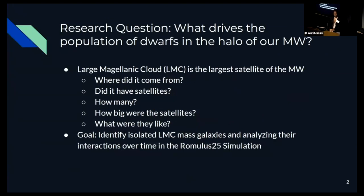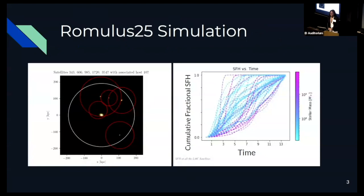My overall research question is: what drives the population of dwarfs in the halo of our Milky Way galaxy? Questions I asked myself: where did the LMC come from? Did it have any satellites? How many and what are they like? I narrowed my goal to identifying isolated LMC mass galaxies and analyzing their interactions over time using the Romulus 25 simulation. This is an example of an isolated LMC analog — the host is enclosed in the white circle, with five satellites surrounding it in red circles. On the right is a star formation history over the age of the universe within all the satellites in our sample.